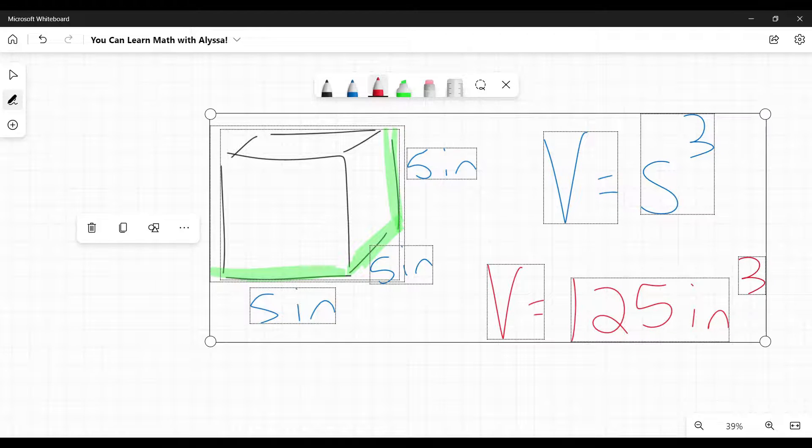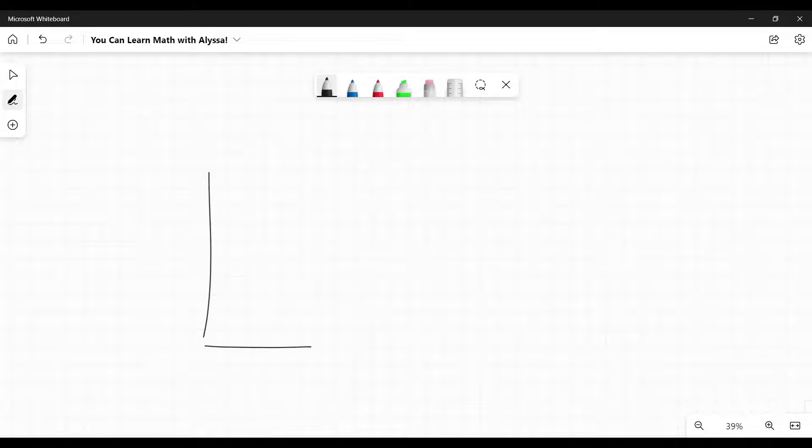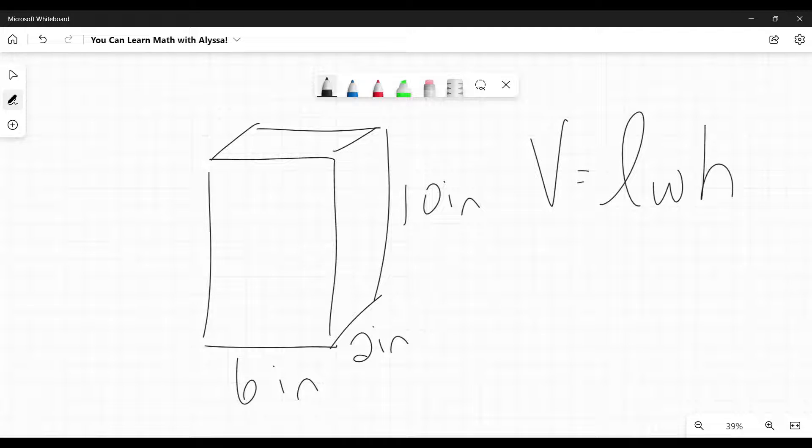Now, very similar to this, we have our rectangular prism. Now the formula is going to look a little different in your math book, but it is the same. Actually, it's doing the same thing. You are most likely going to see volume equals length times width times height. And what are they doing? They're doing the same thing we just did with that cube, even though the formula looks different. They're multiplying the length times the width times the height. So in this case, six times two times 10. Six times two is 12 times 10 is 120. Units are inches, inches cubed.